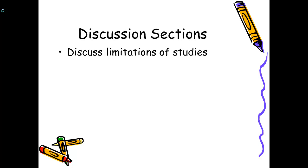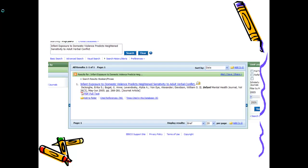First off, discussion sections. In every discussion section, authors should discuss the limitations of their studies. This is a very valuable source to find ideas for extensions. Let's go to an example. Infant exposure to domestic violence predicts heightened sensitivity to adult verbal conflict. So let's go through and look at the PDF file.